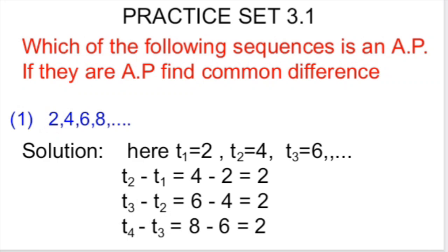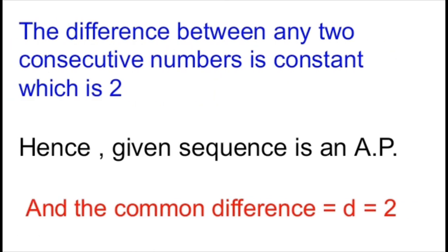We also saw how to calculate the common difference in the last lecture. The difference between any two consecutive terms is constant, which is 2. Hence the given sequence is an AP and the common difference D is 2.